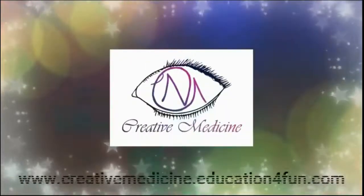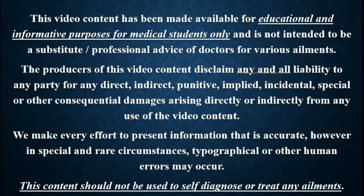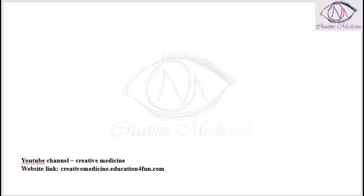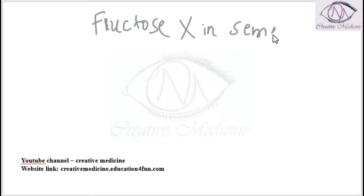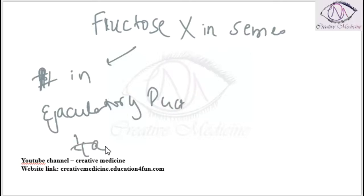Hello friends, welcome to Creative Medicine. In this lecture, we will learn about what to do when fructose is absent in the semen. If fructose is absent in the semen, there are two ways. One: if a block is present in the ejaculatory duct, you will have to do a transrectal ultrasonography. Second: if there is bilateral absence of the seminal vesicles along with bilateral vas deferens also absent.